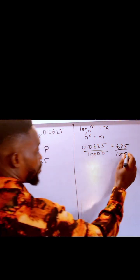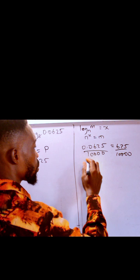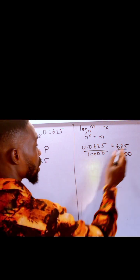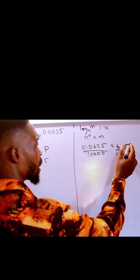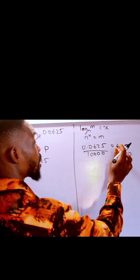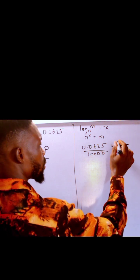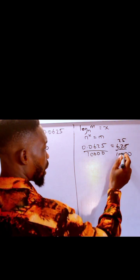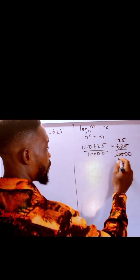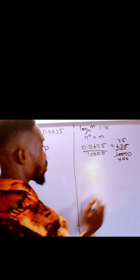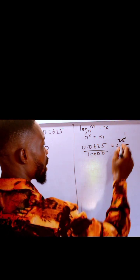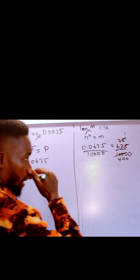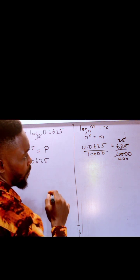So if we break this, if we reduce it to a simpler form, 625 divided by 25 should give us 25. 10,000 divided by 25 is 400, so we have 25 over 400.